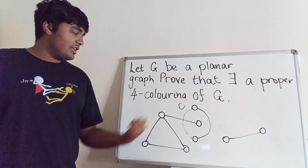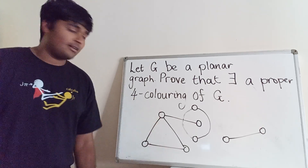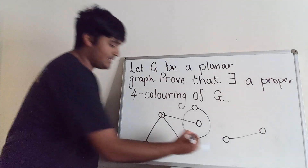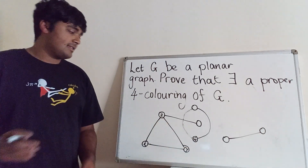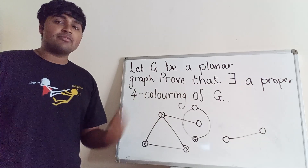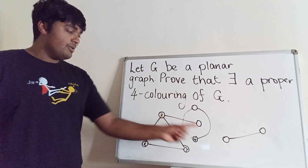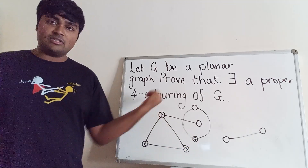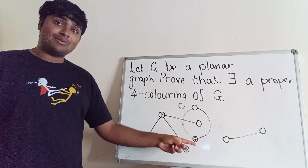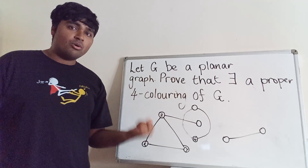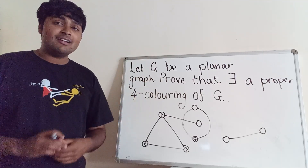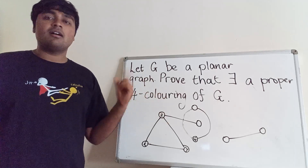So what is a colouring? For each vertex — each of these circles — we assign a colour: say blue, red, yellow, and green as the fourth colour. What we mean by a proper four-colouring is that no vertex is adjacent to another vertex of the same colour. For example, if this one's blue, I can't colour an adjacent vertex blue. Similarly, a vertex can't be green if its neighbour is already green. So we want to prove that we can colour all vertices such that no two adjacent vertices share the same colour.